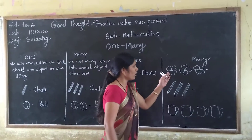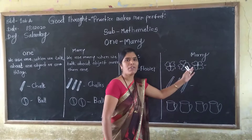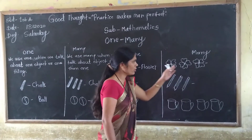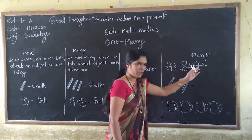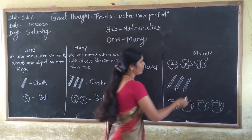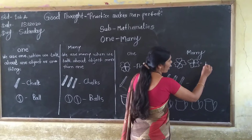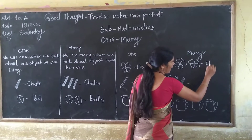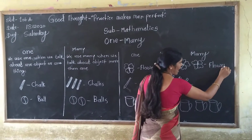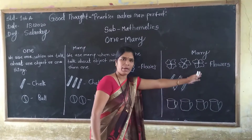Look at this picture. Those are 3 flowers. We count it: 1, 2, 3. Those are many flowers. We write it here: flower, flowers — F-L-O-W-E-R-S. Those are many flowers.